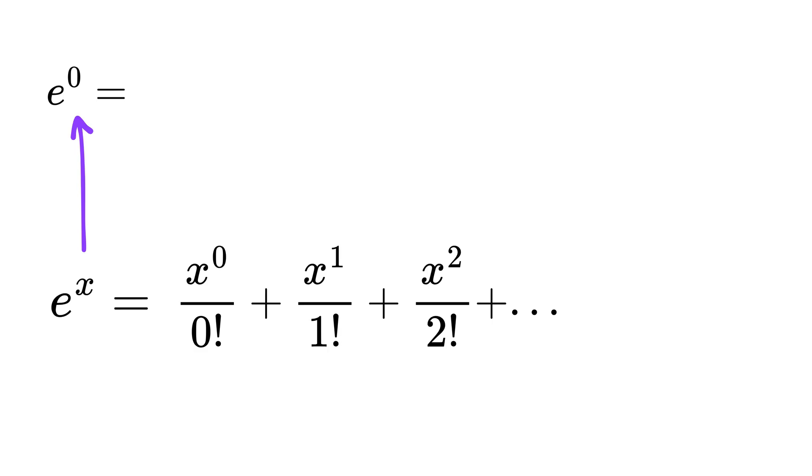Now, if we put x as zero in this expression, the first term becomes zero raised to zero divided by zero factorial. The second term becomes zero raised to one divided by one factorial. The third term becomes zero raised to two divided by two factorial and so on.